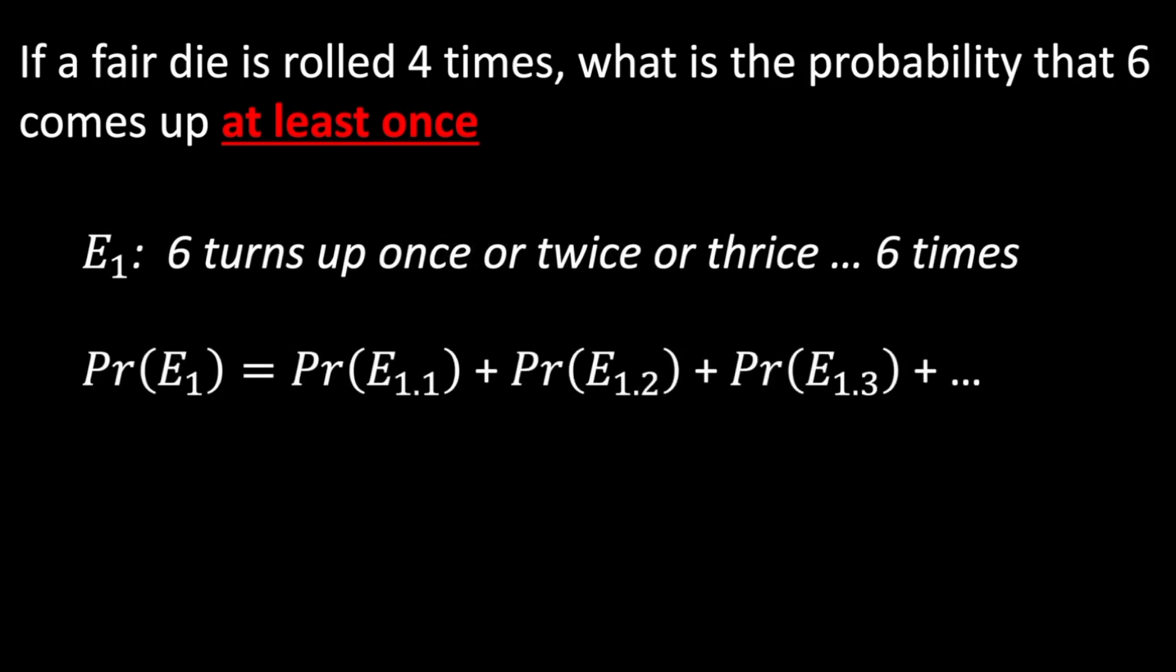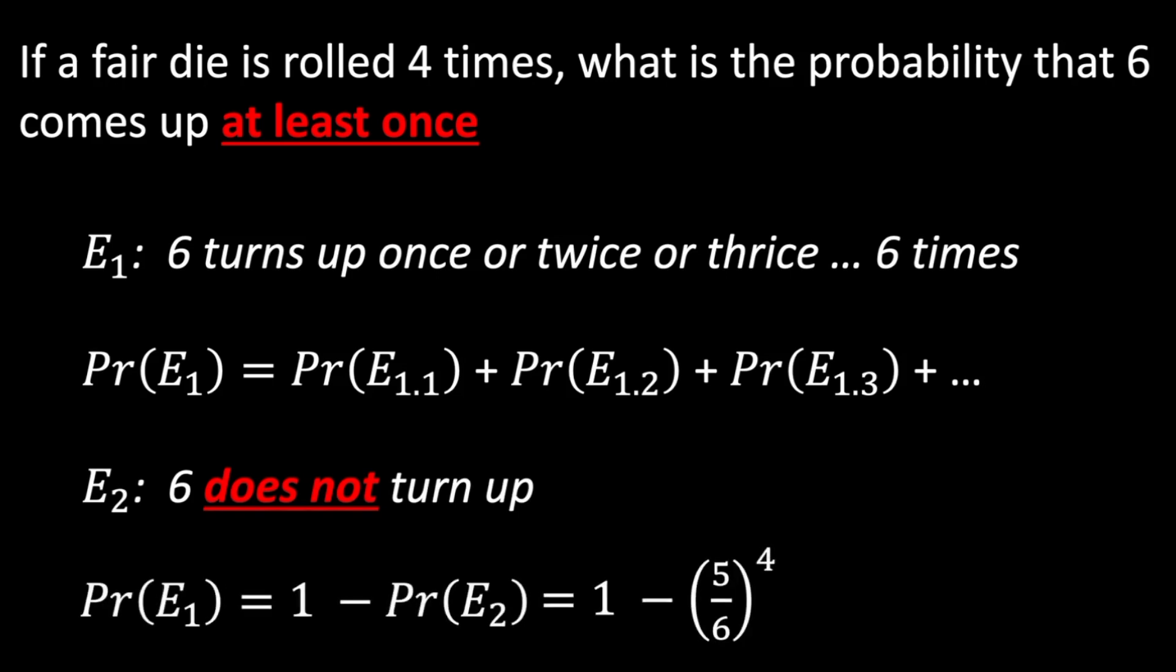Instead of rushing to calculate the individual probabilities, just recognize that the logical complement event is 6 not turning up at all on any roll. Our probability of interest is then the complement of this event: 1 minus 5 over 6 raised to the power of 4, for 4 independent rolls of a fair die not landing on 6, giving us 0.52 approximately.